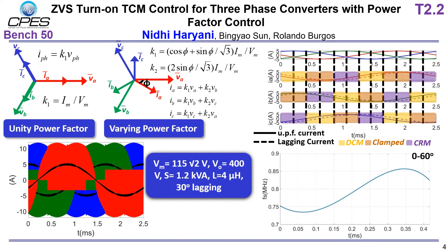Now I will present on power factor control TCM. Existing literature is limited to unity power factor only for CRM, even for single phase. I propose to do the same for reactive power control. We can still achieve TCM in lagging or leading power factor cases by doing a combination of TCM plus TCM plus clamped. You can see the phase currents here — the ripple is higher than unity power factor, but the switching frequency variation is still very small. Even though the ripple is higher, I can still maintain 99% efficiency because the conduction losses of my converter are pretty low.